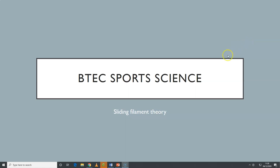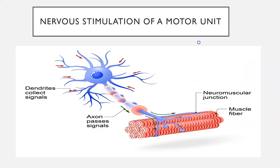Hello and welcome to today's screencast on the sliding filament theory. The sliding filament theory explains how muscles contract. We've gone through the nervous stimulation of a motor unit — when an action potential runs down the axon of a motor neuron and gets to the muscle fibre, we have a muscular contraction. The sliding filament theory actually explains how that contraction takes place.